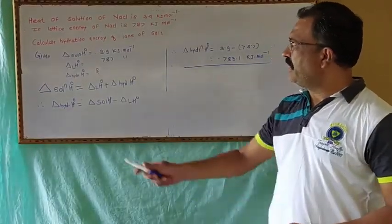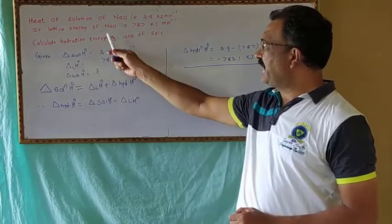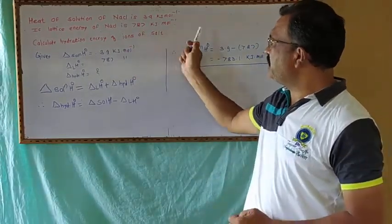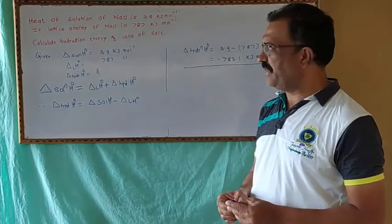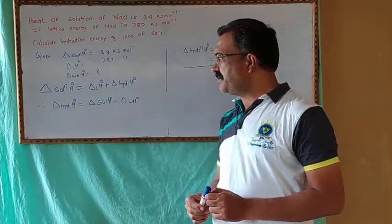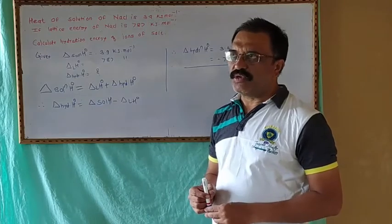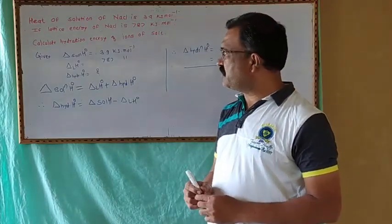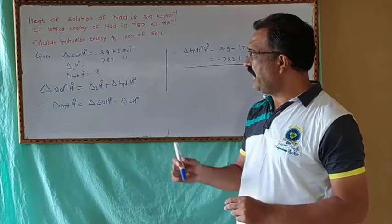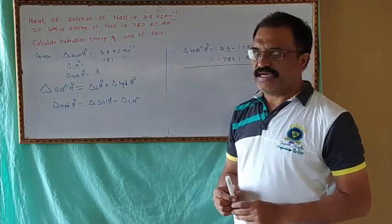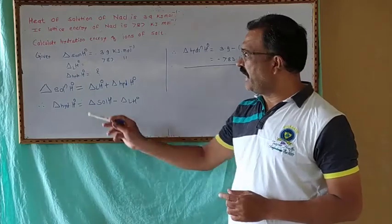Next problem: the heat of solution of sodium chloride is 3.9 kJ/mol. If the lattice energy of sodium chloride is 787 kJ/mol, calculate the hydration energy of the ions. The enthalpy of solution is the enthalpy change when a solute is dissolved into solvent. During dissolution, the solute dissociates into ions — the enthalpy for this is called enthalpy of crystallization. When these ions are surrounded by solvent water molecules, that enthalpy is called enthalpy of hydration.